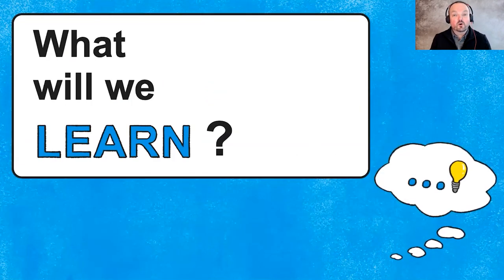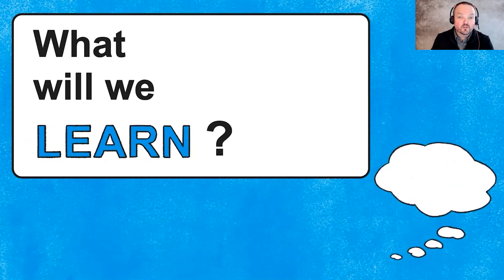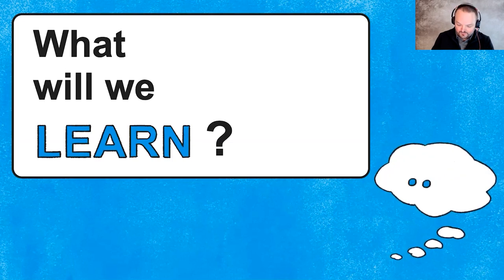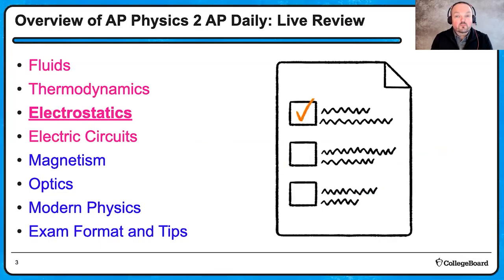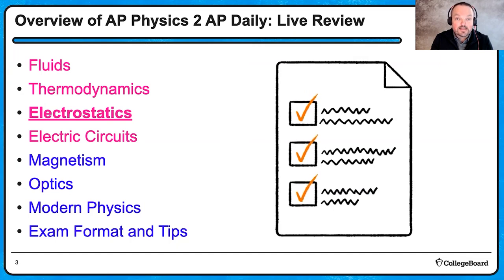We're going to start with an overview of the eight AP Daily Live Review sessions that me and my good friend Mr. Mancino from Connecticut are going to be doing, and then we'll look at the agenda for this session. Monday and Tuesday we did the first two units in Physics II — Fluids and Thermodynamics. Today we'll do Unit 3, Electrostatics. Mr. Mancino will cover the next four sessions over circuits, magnetism, optics, and modern physics before I wrap up next Thursday with a session over exam format and test strategies and tips.